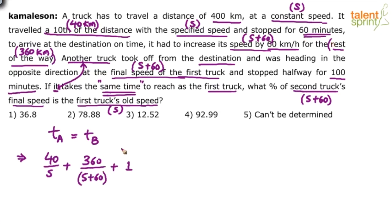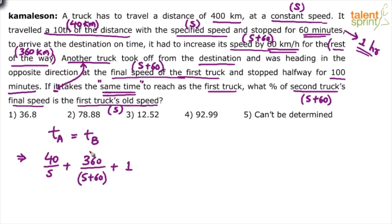Converting to consistent units: all distances are in kilometers, speeds in kilometers per hour, so time must be in hours. The 60-minute stop converts to 1 hour. So the total time taken by the first truck is 40/S plus 360/(S+60) plus 1. This should equal the time taken by truck B.